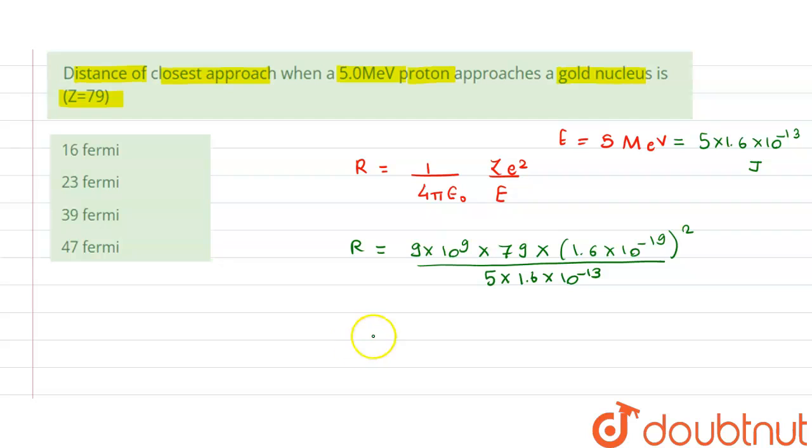On calculating, we get this equal to 2.3 × 10⁻¹⁴ meter. We know that 10⁻¹⁵ meters is equal to 1 fermi.